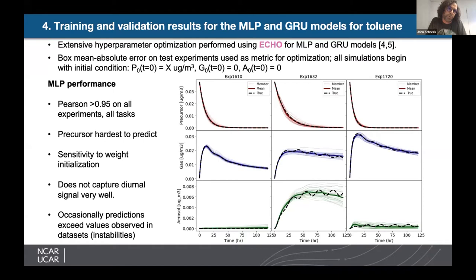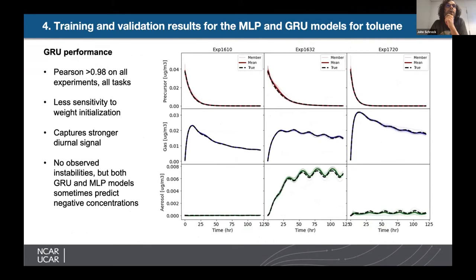Precursor is the hardest to predict. There is sensitivity to weight initialization, and the MLP model doesn't capture the diurnal signal well — it learns the mean. Occasionally it predicts unphysical concentrations out of scope. The GRU model does better: higher Pearson on all tasks, less variation in ensemble members, and importantly it captures the diurnal signal. Unfortunately both models can still go off the rails since they don't understand physics, so we need to constrain their predictions when plugged into models like GEOS-Chem or WRF-Chem.